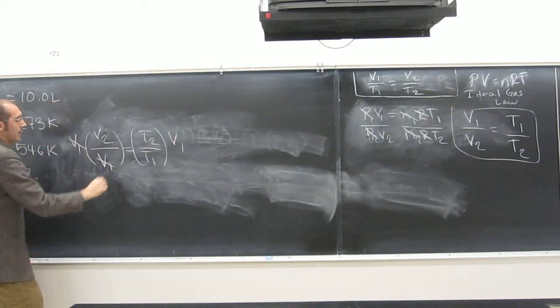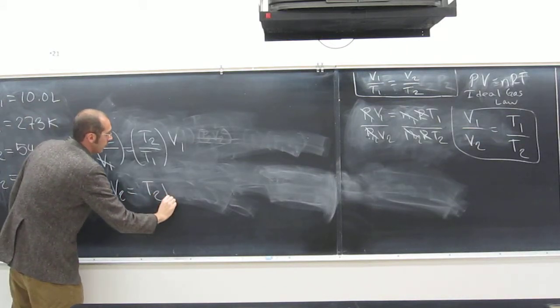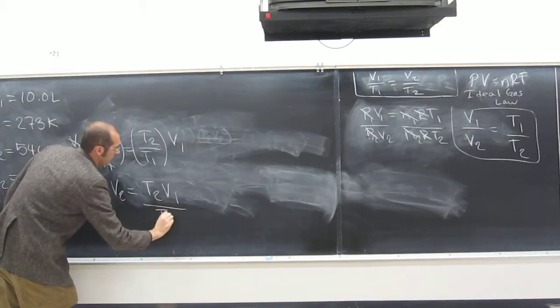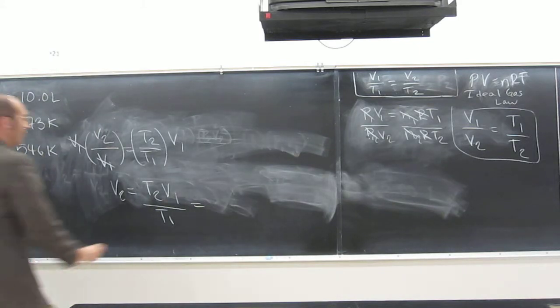Right. So once our new, so that cancels, our new equation is V2 equals what? T2 V1 over T1, like that, right. It's much easier to do it this way instead of with the numbers. So now what do we do? Plug and chug, right. Plug and chug. Plug and chug, yes, exactly.